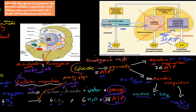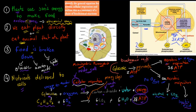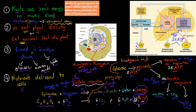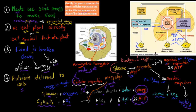To recap the dot point: the general equation for aerobic cellular respiration is glucose plus oxygen → carbon dioxide plus water plus energy. The chemical equation is C6H12O6 plus 6O2 → 6CO2 plus 6H2O plus 38 ATP — 2 from glucose to pyruvate, and 36 from the aerobic steps. The outline of steps is: glucose to pyruvate in the cytosol (2 ATP), then Krebs cycle and electron transport chain in the mitochondria (36 ATP). Anaerobic respiration only produces 2 ATP.